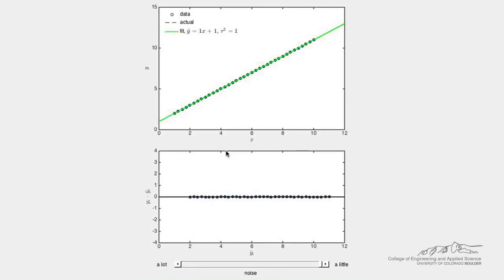This demo shows the effect of random noise and outliers on the line of best fit in a linear regression. Experimental data are generated numerically from the line y equals x plus 1, which is shown as the black dashed line in the top plot.